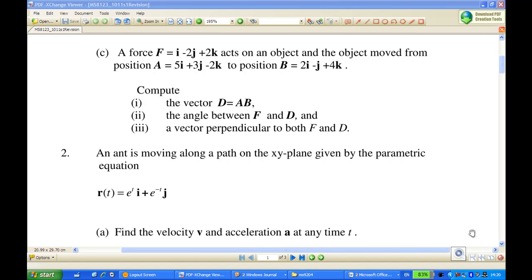Hi, for this recording I'm going to show you how to solve this problem. A force F, which is i - 2j + 2k, acts on an object. The object moves from point A, which is 5i + 3j - 2k, to B, which is 2i - j + 4k.